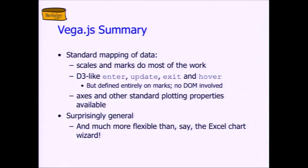To summarize the themes of Vega: much simpler, much less programmatic than D3, but much more declarative — just a mapping of data. Scales and marks do most of the work. Once I know X space and Y space, or on a circle chart radial space, and I know where the data goes, the last bit is just: for each data item, once I know where it goes, what do you want me to draw there and what are its properties? Color, extent, and so on. It does have D3-like enter, update, exit, and hover stuff, but it's defined entirely on marks — there's no DOM involved, you're always talking about the marks you're drawing. It's surprisingly general — when you compare it to something like the Excel chart wizard, it's way more powerful.